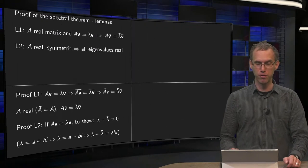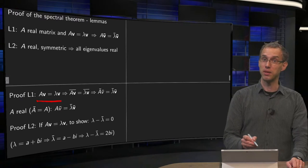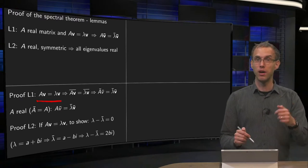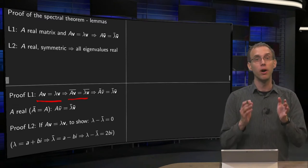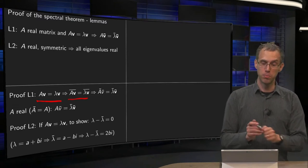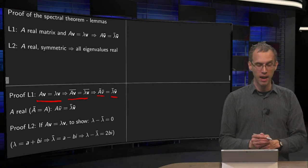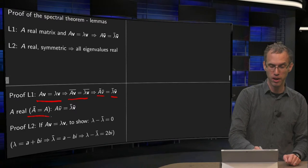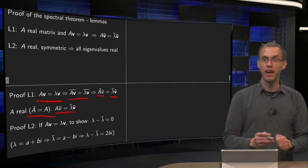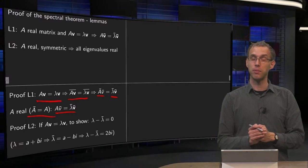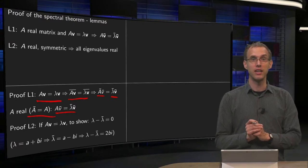So how do we prove the first one? That is actually easy. If you have A times V equals lambda times V, then you put the complex conjugate on the left-hand side and on the right-hand side. The complex conjugate of a product is the product of the complex conjugates. Then you use that A is real, so the complex conjugate of A is just A. So there we go: A times V-bar equals lambda-bar times V-bar. Done.